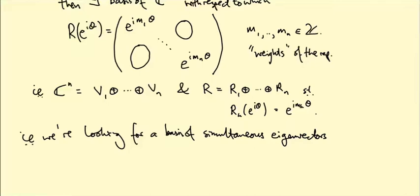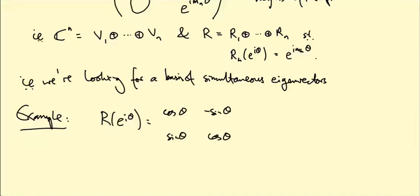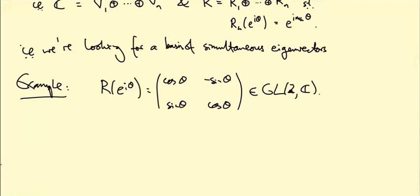So let's just do a quick example. Let's take R(e^{iθ}) equals this two-by-two matrix that I keep writing down: cos θ, -sin θ, sin θ, cos θ. So this is a two-dimensional representation of U(1), but I'm thinking of it as a two-dimensional complex representation in GL(2,C).